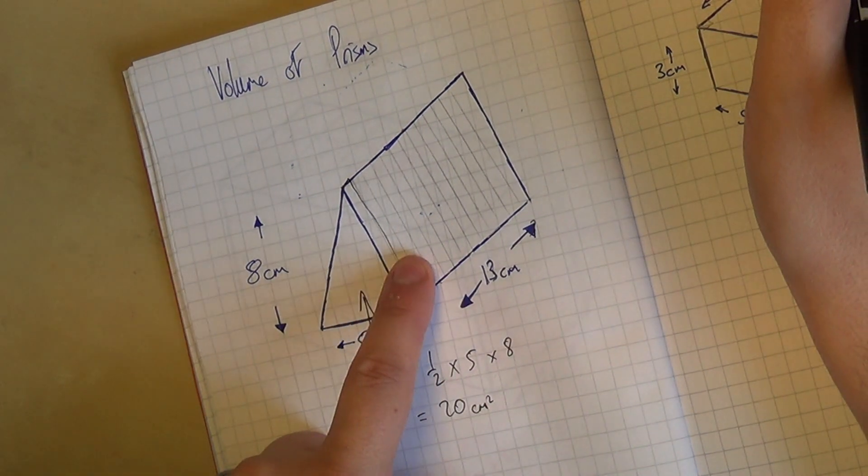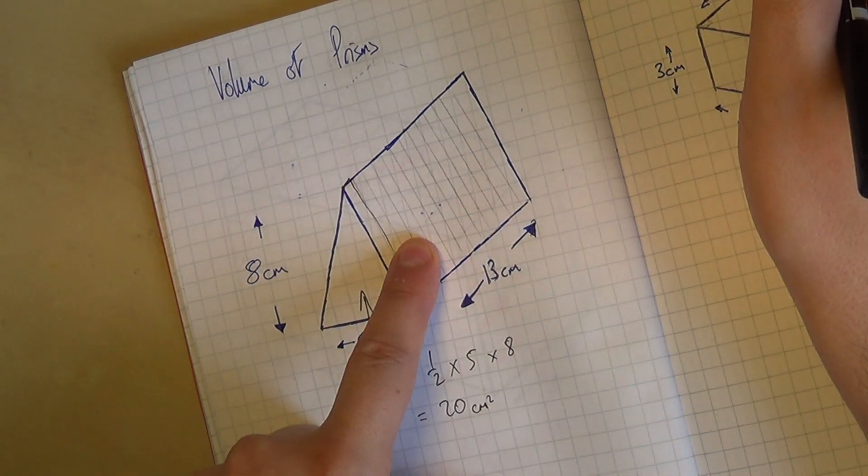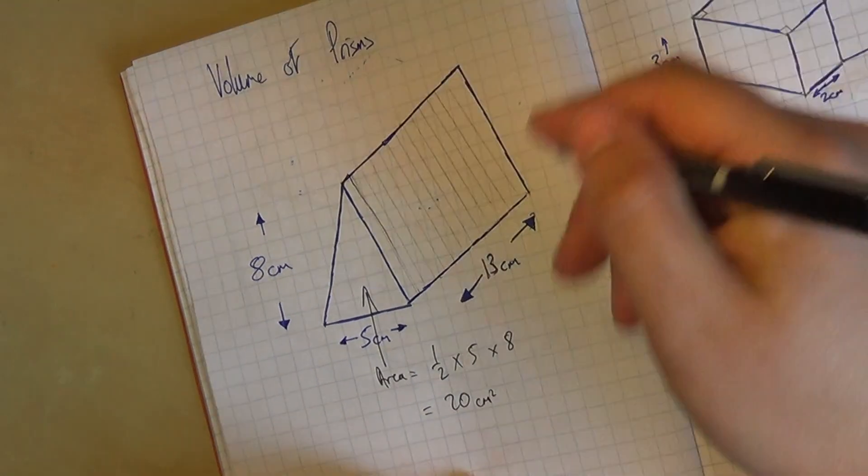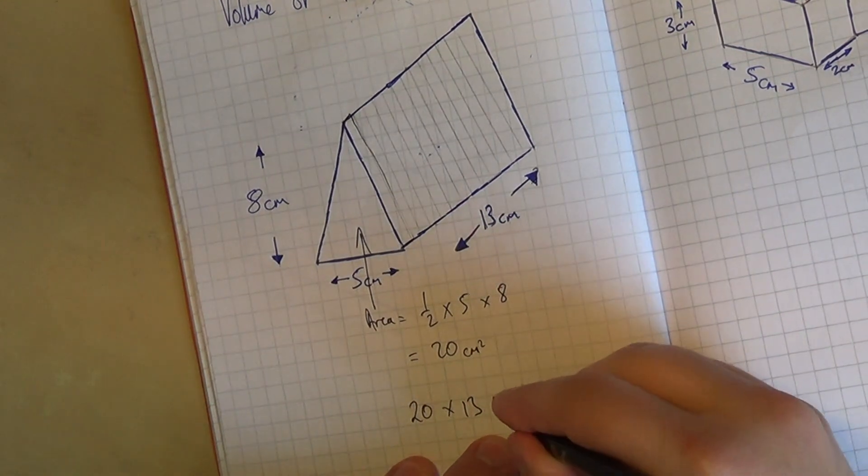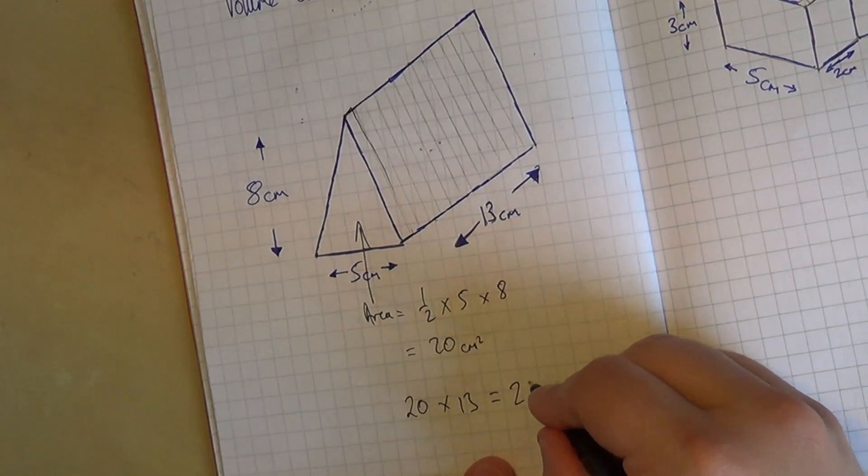So is this next slice, so is this next slice, so is this next slice. So we're going to do 13 of those. So it's this 20 times 13, which either with a calculator or in your head, is 260.